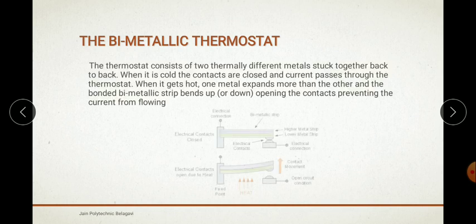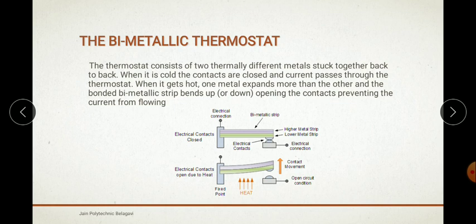This is explained with the help of a figure showing two conditions. In cold conditions, the two metals are stuck together with metal contacts made — a high metal strip and a lower metal strip. In hot conditions, due to the increased heat, the metal expands, the strip bends, and it loses contact, resulting in an open circuit condition. This is the working of the bimetallic thermostat.